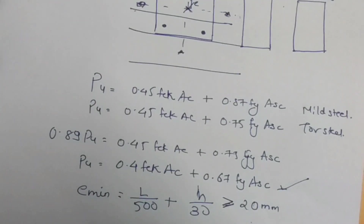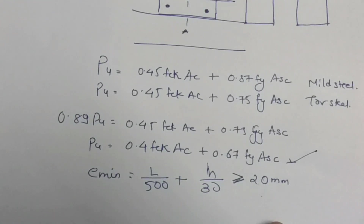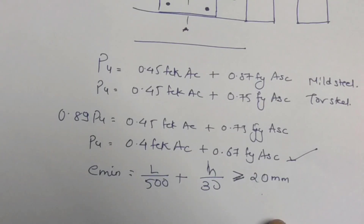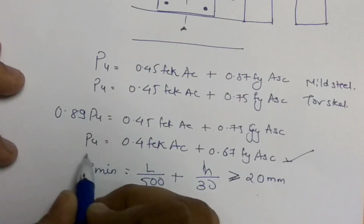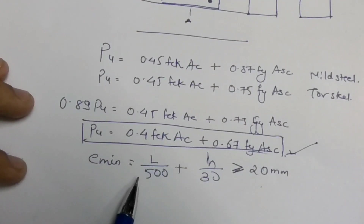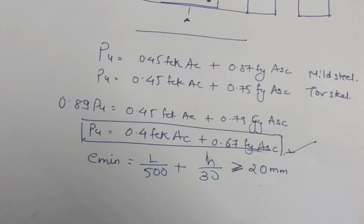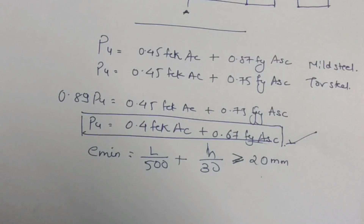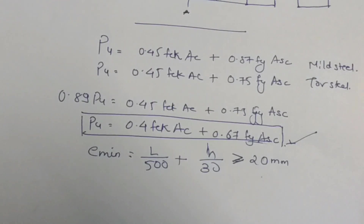Usually, as per IS code, we assume a minimum eccentricity of 20 mm in a column. In this case, what we do is reduce the column's strength by 11%. So if we rewrite the equation, the valid form of the equation will apply when the minimum eccentricity is 20 mm or more. If eccentricity is less than 20 mm, we design it as a uniaxial member with both bending and compression. I hope this was clear. If you have any questions or doubts, please comment, and please like this video and subscribe to my channel. Thank you.